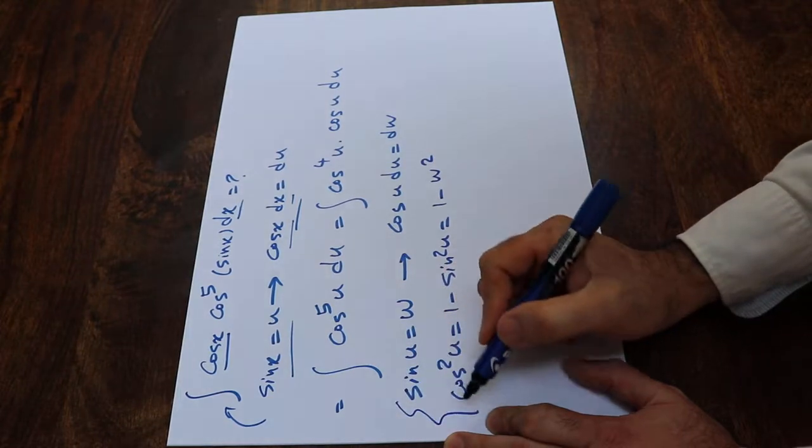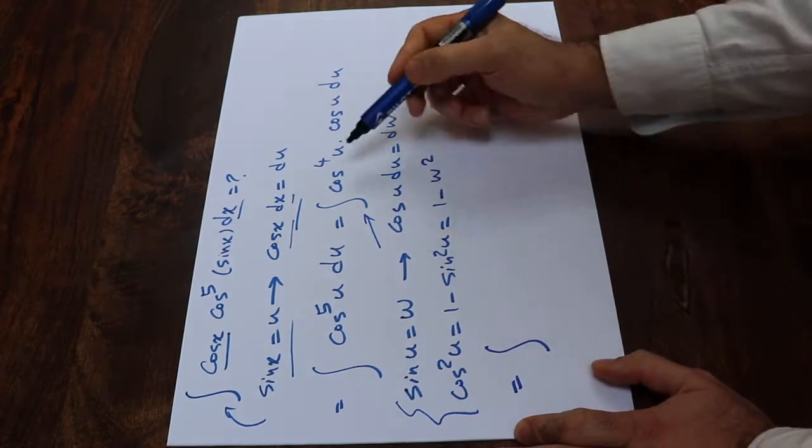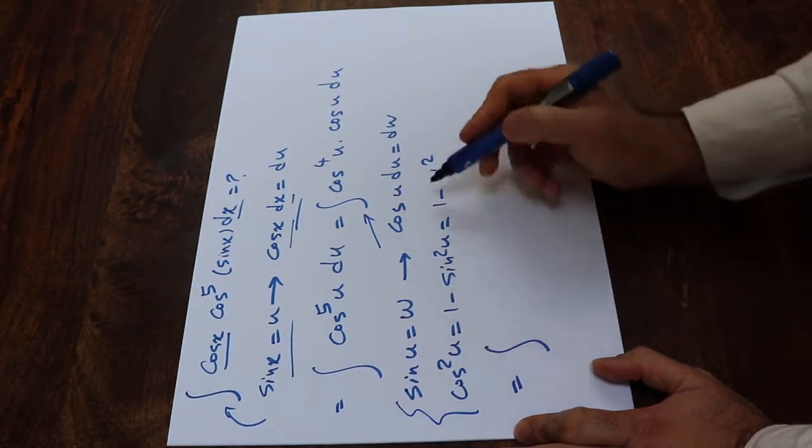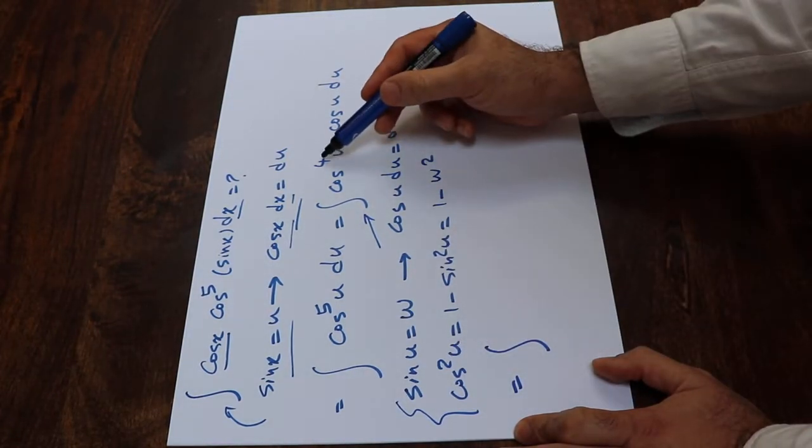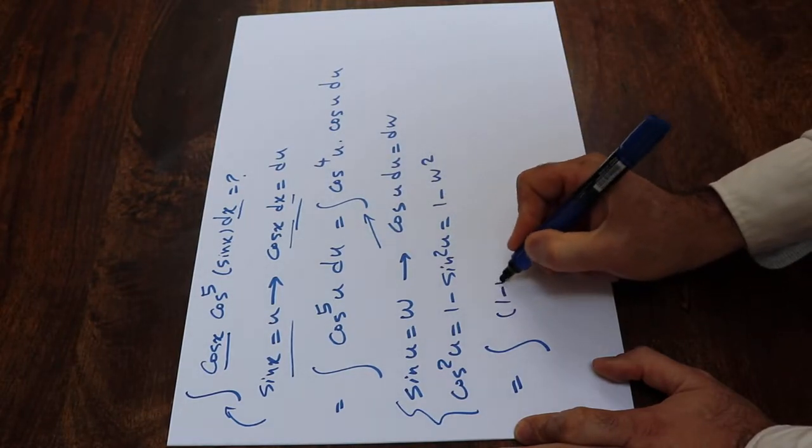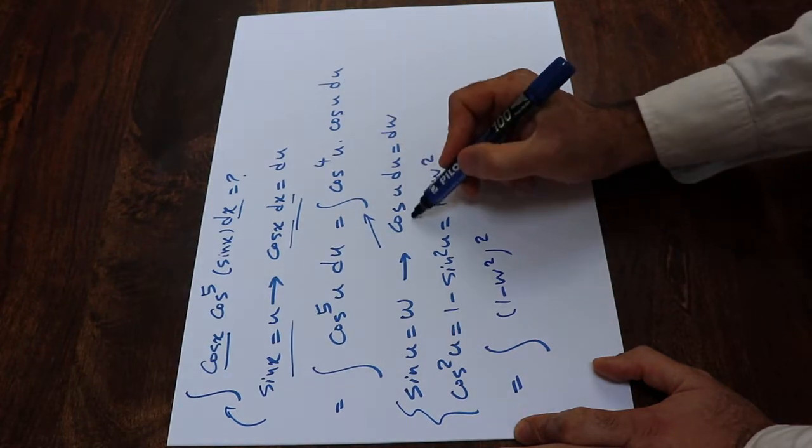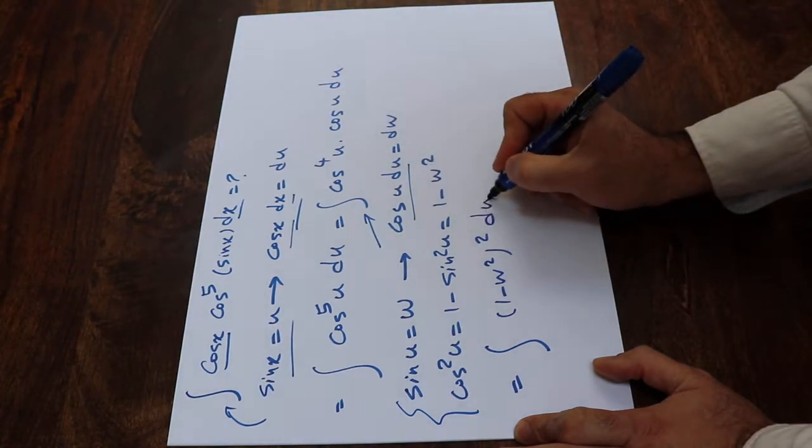If you now substitute this expression into this integral, that will be equal to the integral of cos⁴(u), which is (1 minus w²)², times cos(u)du. In place of cos(u)du, I can simply write dw.